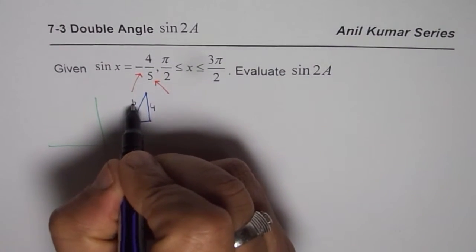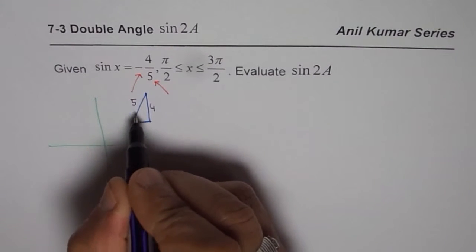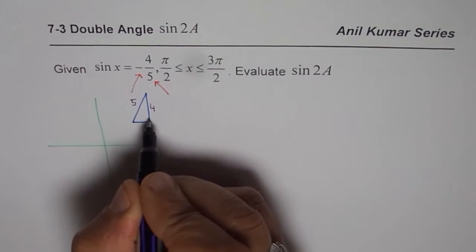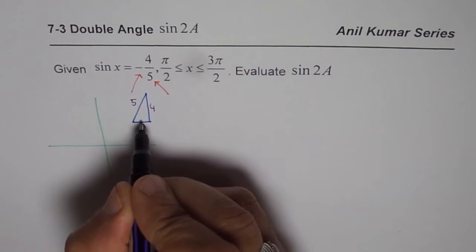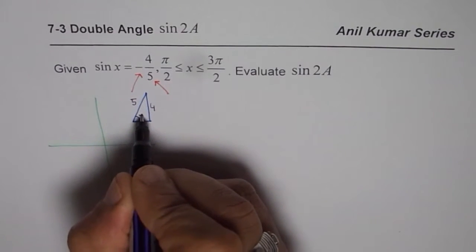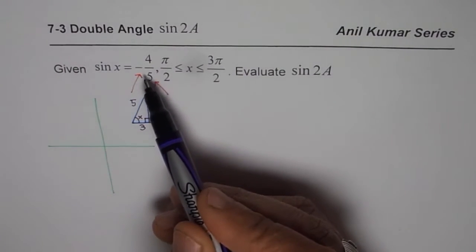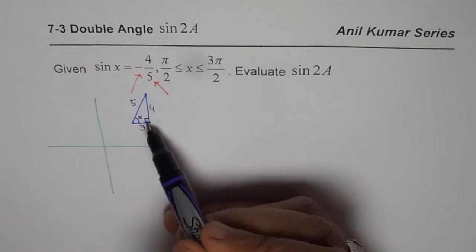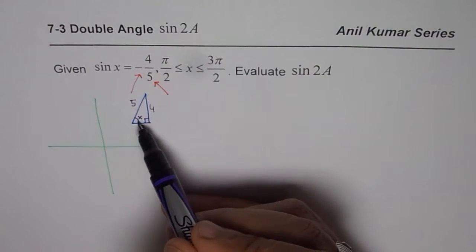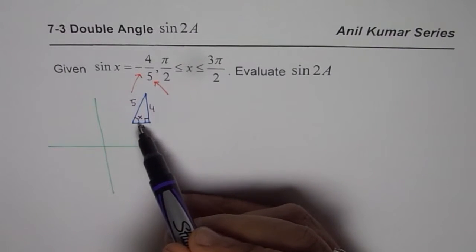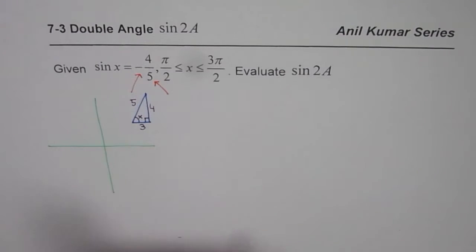The hypotenuse is 5, and you can always find the third side which is square root of 5 squared minus 4 squared, and as you know it is 3. So this angle is x for us and that is 90 degrees.